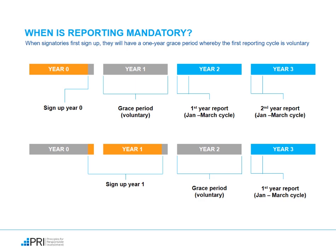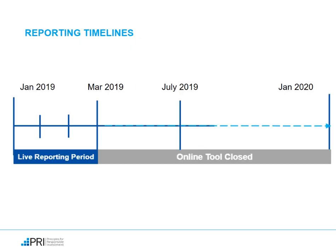Once you are a signatory to the PRI, you must report on a yearly basis to maintain your signatory status. Reporting is mandatory for all signatories; however, signatories do get a voluntary reporting year after they have signed up. We recommend that signatories do report in their voluntary year as a learning opportunity and to prepare for their mandatory reporting year. Once you have signed up and determined your first mandatory reporting year, you will report between the beginning of January to the end of March each year. After March, our online reporting tool where you submit your report will be closed and you will not be able to submit a report after that.